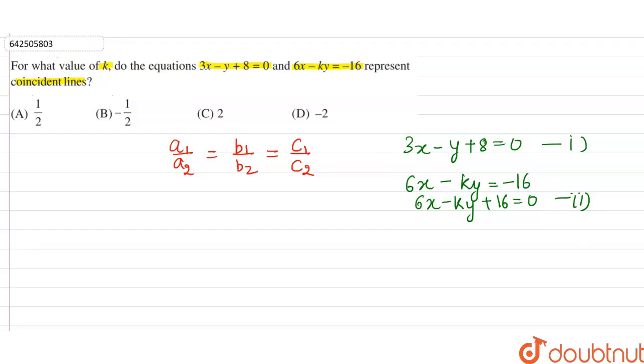Now, a is the coefficient of x, b is the coefficient of y, and c is the constant term.